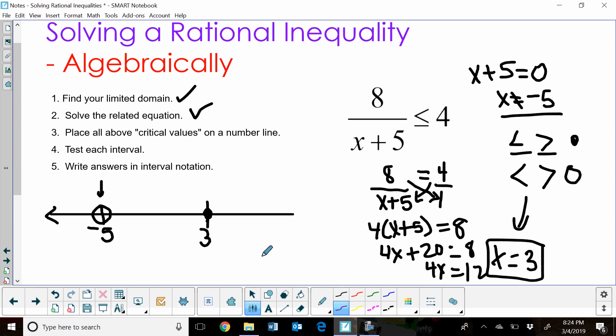So now at this point, I can test my intervals. I've placed our numbers on the number line. Now we're going to test each interval. To test the intervals, we're going to find values in each of these three regions: to the left of negative 5, between negative 5 and 3, and to the right of positive 3.